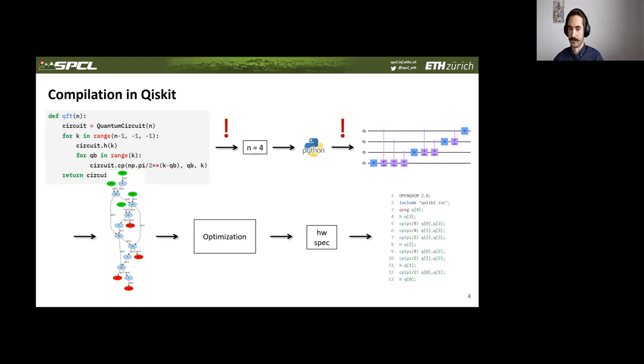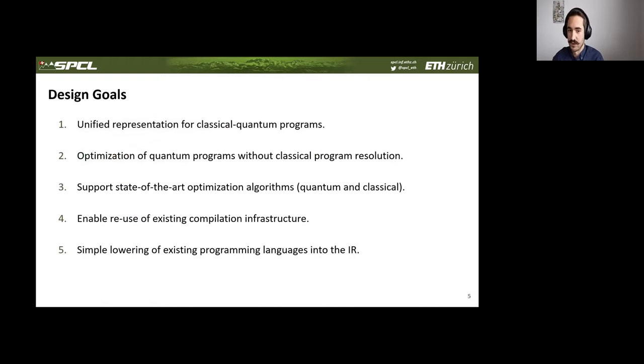So the takeaway here is that in order to compile this program in Qiskit, we had to specify the program parameters. We lost all the classical program structure in the process of generating the circuit, and this increased the program size, which increases the computational requirements for analyzing and optimizing this program. So these previous approaches, they work well for small near-term quantum programs, but we quickly run into problems if we consider application-scale programs.